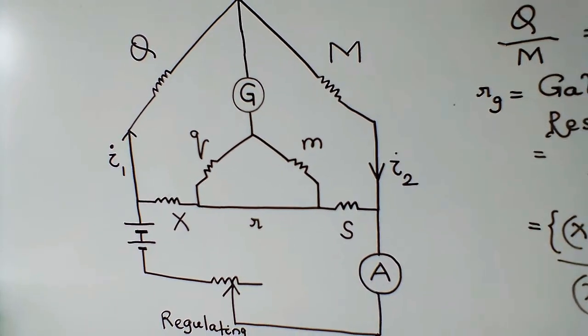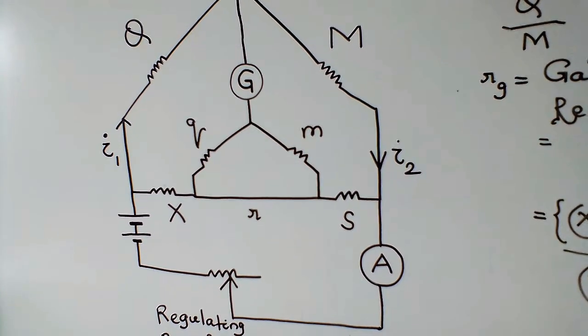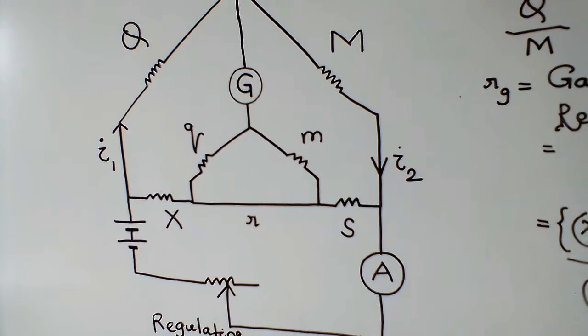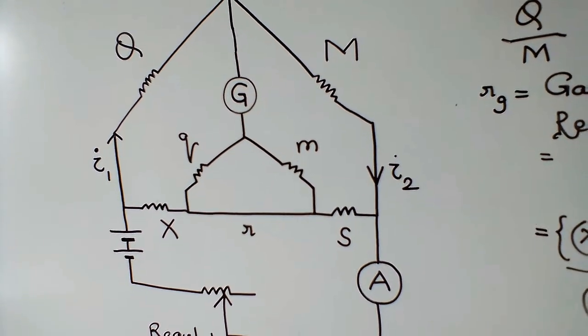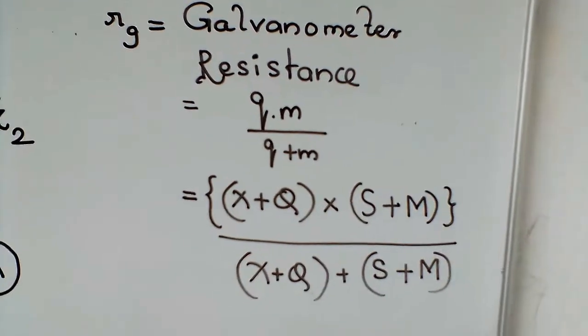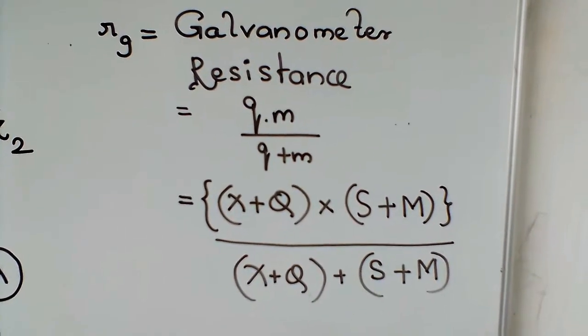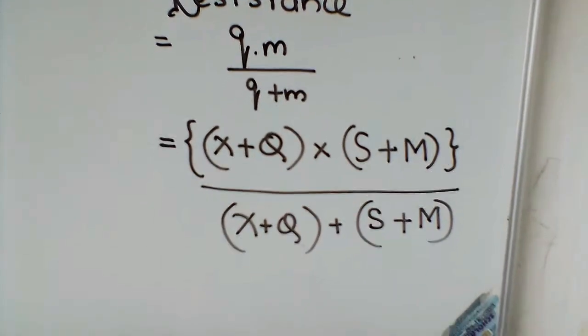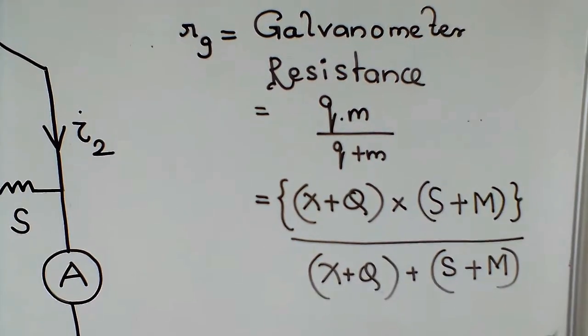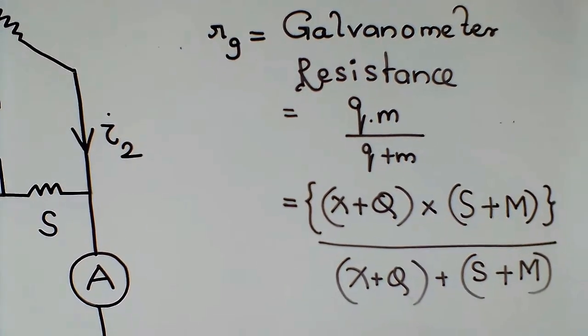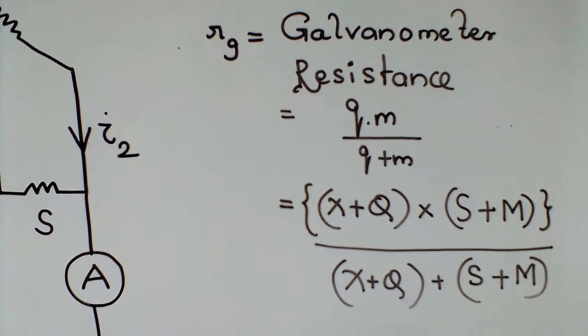See the figure. Small q equals X plus capital Q, small m equals S plus capital M. So we can write Rg should be equal to (X plus Q) times (S plus M) divided by (X plus Q) plus (S plus M). This is the simplified version of elaboration to find out unknown resistance.